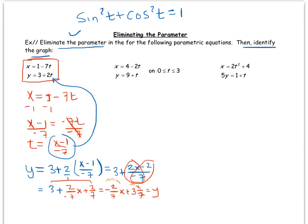mx plus b form, and so this is a line with slope negative 2 sevenths. I would accept line with negative slope, that's fine too.